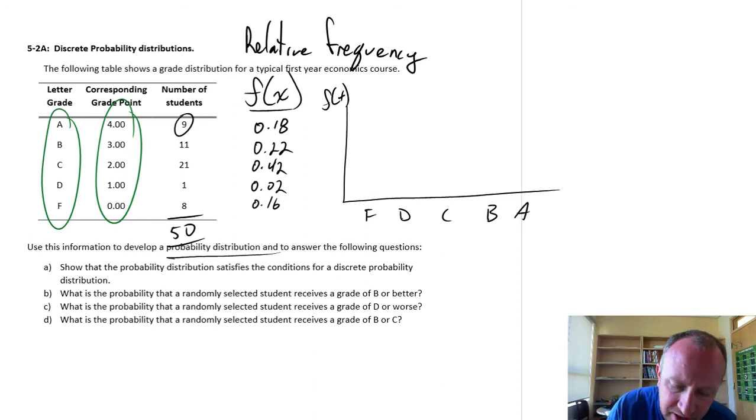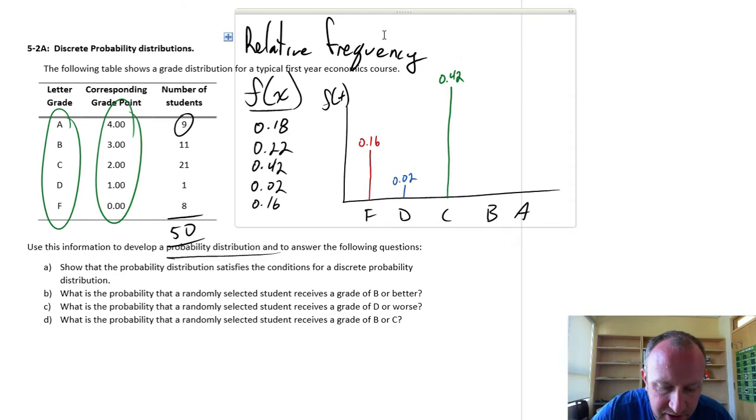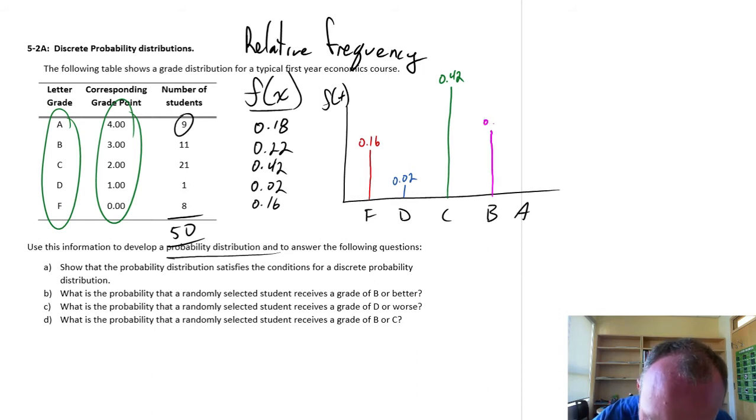But we'll just do this, because we've got the information in front of us, so we might as well go through. So the F, what's the frequency of, or the probability of receiving an F? That's 0.16, so here I'm just going to ballpark and draw a line about 0.16. Probability of a D, 0.02, so that's somewhat smaller, down here. The probability of a C is 0.42, so that one's much higher, way up here. And the probability of a B, this is 0.22, so somewhere in here. And an A is 0.18. So that's a little bit more than the F, a little bit less than the B. It doesn't have to be perfect, just to give a general idea of here's that grade distribution.